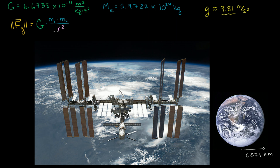So let's use the universal law of gravitation to figure out what the acceleration due to gravity should be at the surface of the Earth. I have G right over here, the mass of the Earth, and the radius of the Earth. For this, we're going to assume that the distance between a body at the surface of the Earth and the center of the Earth is just going to be the radius of the Earth.